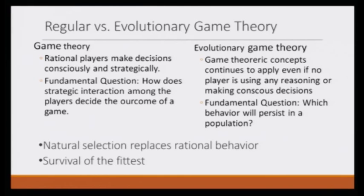We have already discussed regular game theory for 4 weeks — we are calling it regular game theory as opposed to evolutionary game theory. In regular game theory, players are rational: they make decisions not only rationally, but consciously and strategically. So there are 3 factors: players who make decisions rationally, consciously, and strategically.